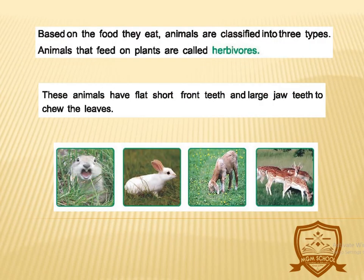Based on the food they eat, animals are classified into three types. Animals that feed on plants are called herbivorous. These animals have flat, short front teeth and large jaw teeth to chew the leaves.